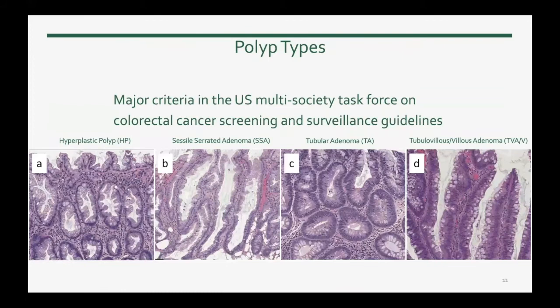In our project, we focus on four types of polyps, which are the most common types and are major criteria in the U.S. multi-society task force on colorectal cancer screening and surveillance guidelines. Here you can see the names of these polyps and a classical example of each type.